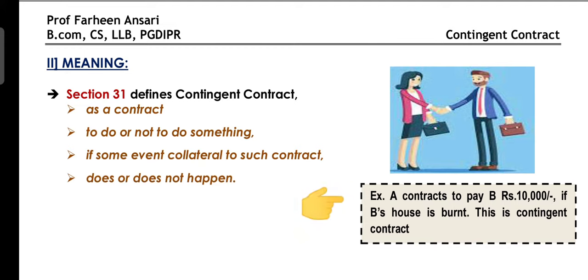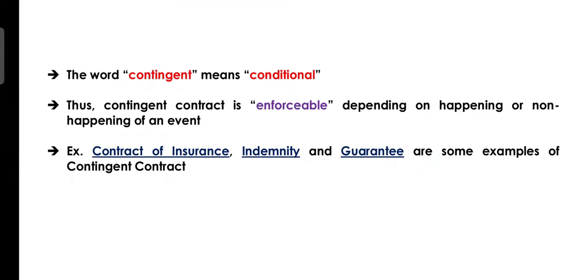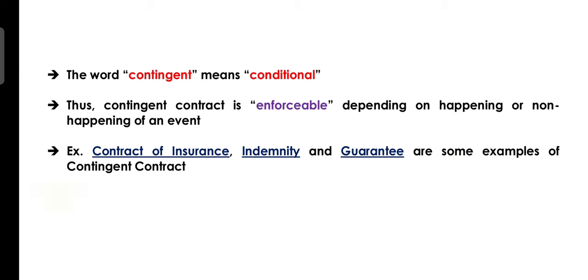For example, A has promised B that he will give 10,000 rupees if B's house catches fire. A's performance is conditional on that event — if it happens, A will perform; if it does not, A will not perform. This is a Contingent Contract. Performance under a Contingent Contract depends on the happening or non-happening of some event. Contract of Insurance, Indemnity, and Guarantee are some examples of Contingent Contracts.